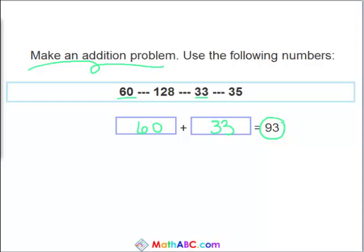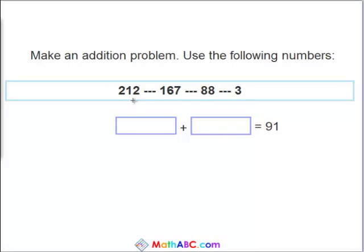Let's try another one. Now we have to equal 91. Now which of these two numbers added together would equal 91? 212, 167, 88, and 3. This is what we have.